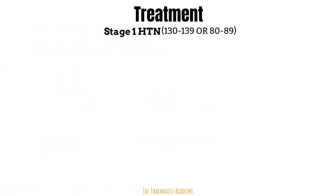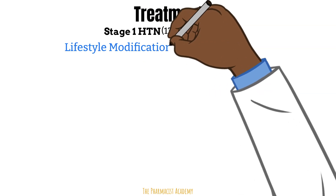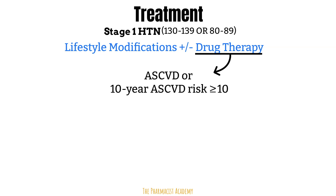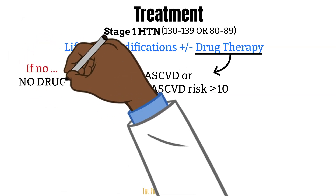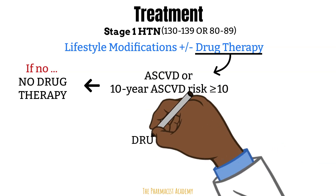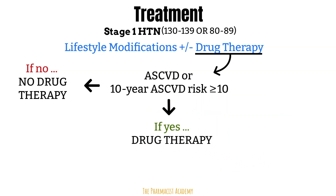In patients with stage one hypertension, guidelines recommend lifestyle modifications for all patients, plus or minus drug therapy depending on atherosclerotic cardiovascular disease or the 10-year risk of developing one. If the patient has a baseline MI, stroke, angina, or peripheral artery disease, or a 10-year risk greater than 10% on the calculator, drug therapy with lifestyle modifications is recommended. If not, just lifestyle modification with reassessment in three to six months. The blood pressure goal in either case is less than 130 over 80.